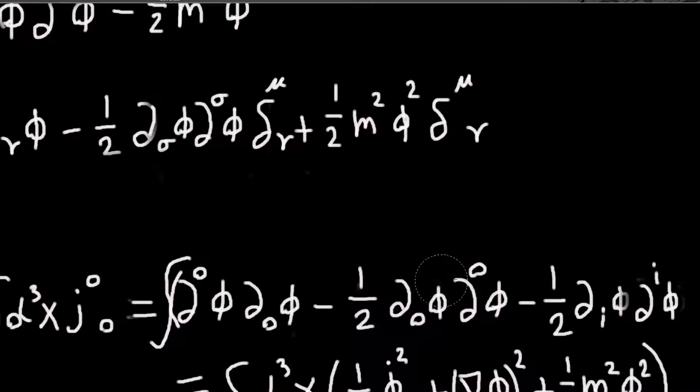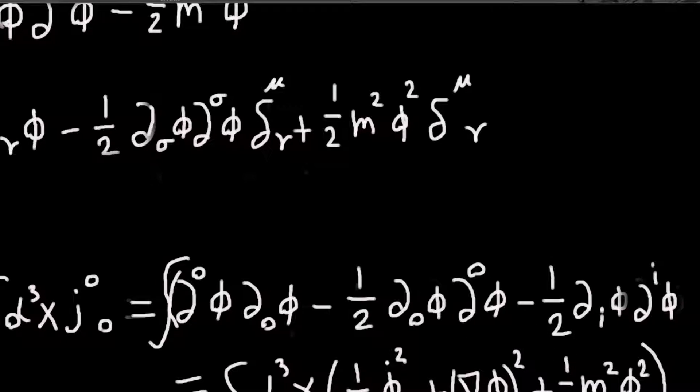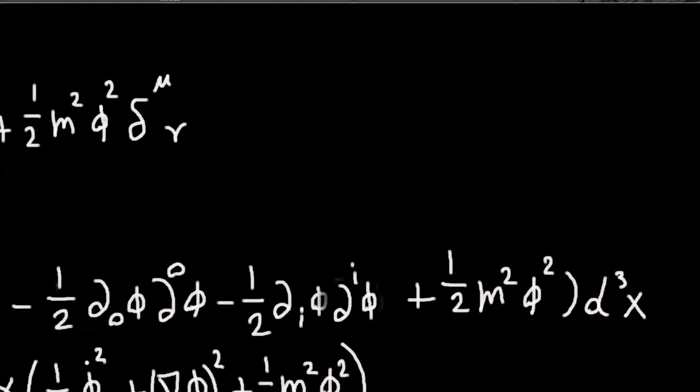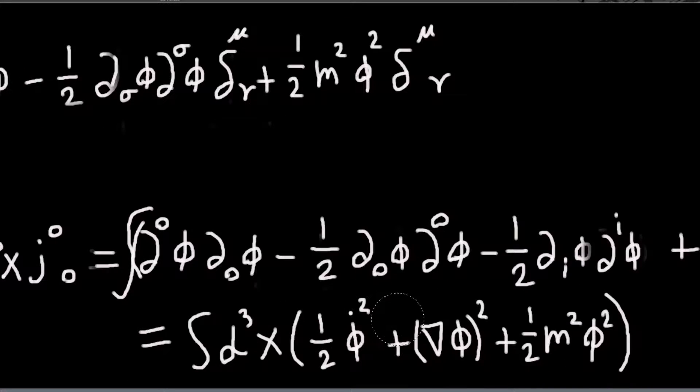So this will be minus, you know, with d zero d zero phi. And then minus this di di phi. Where i is another sum, but from one to three. So only over the spatial parts. And I still have this term here.